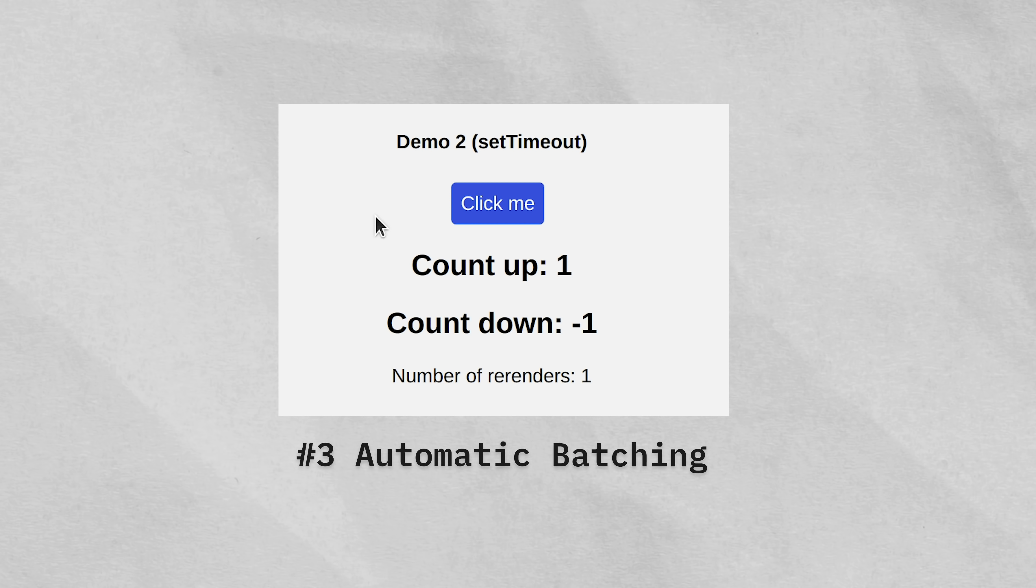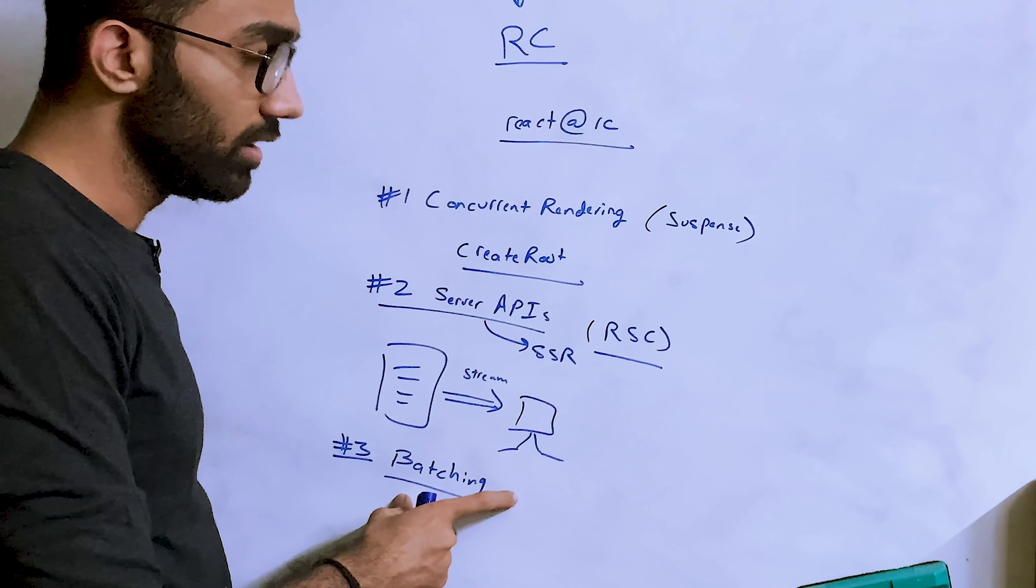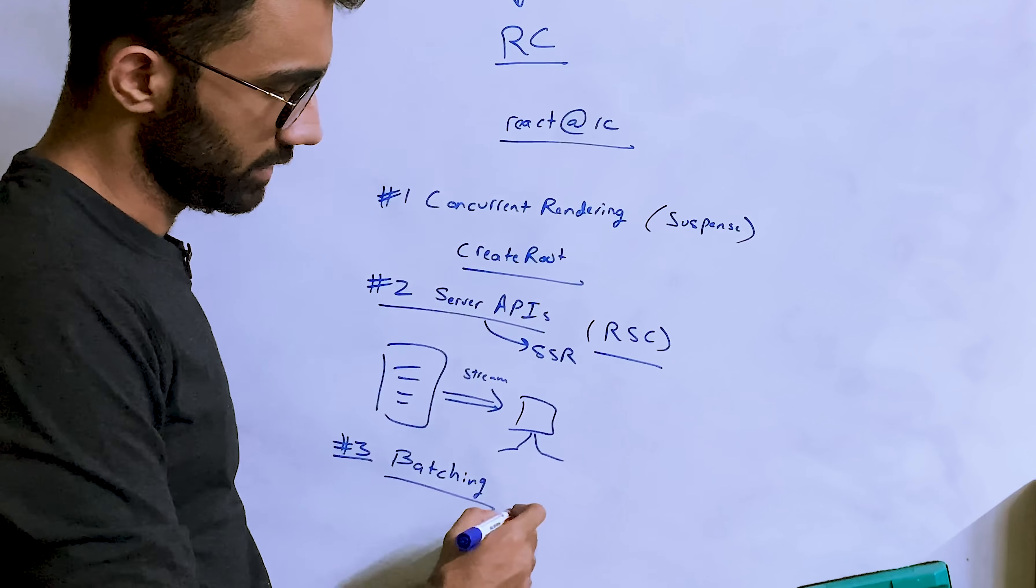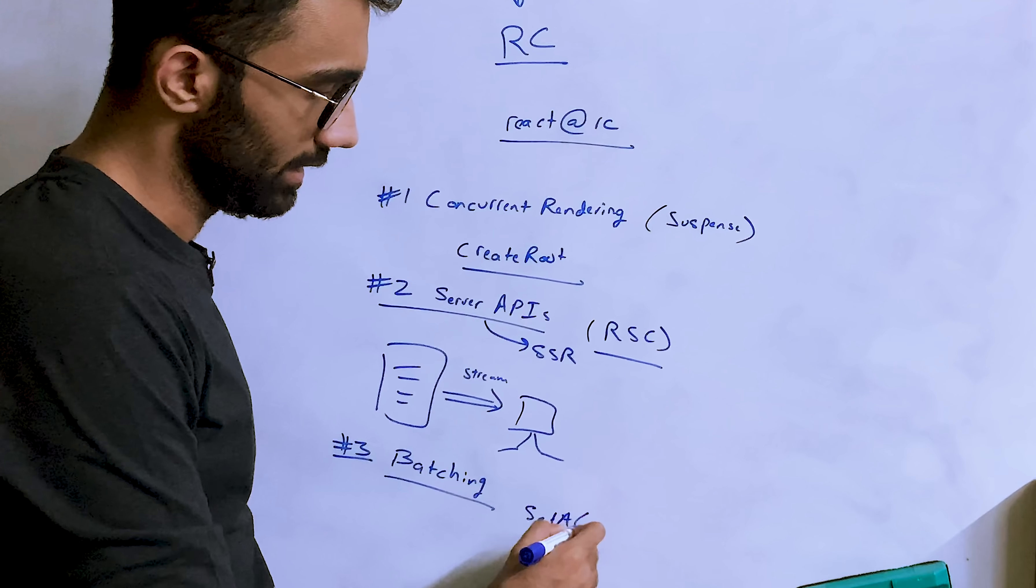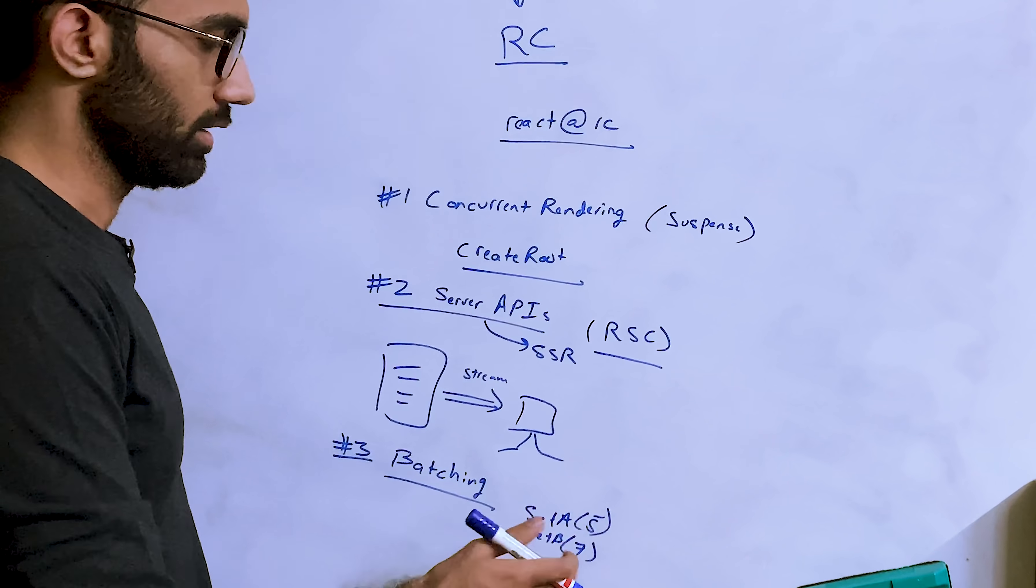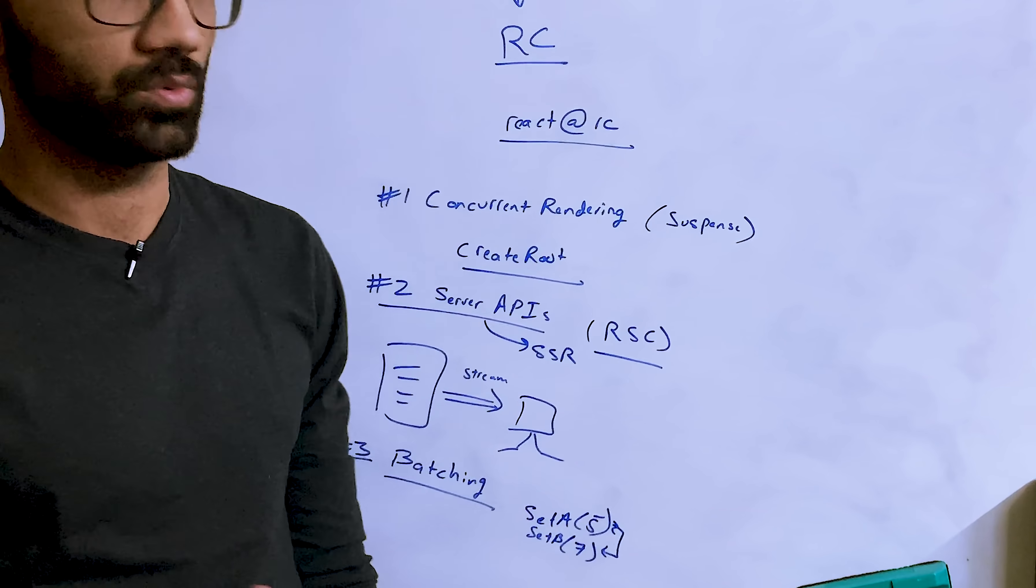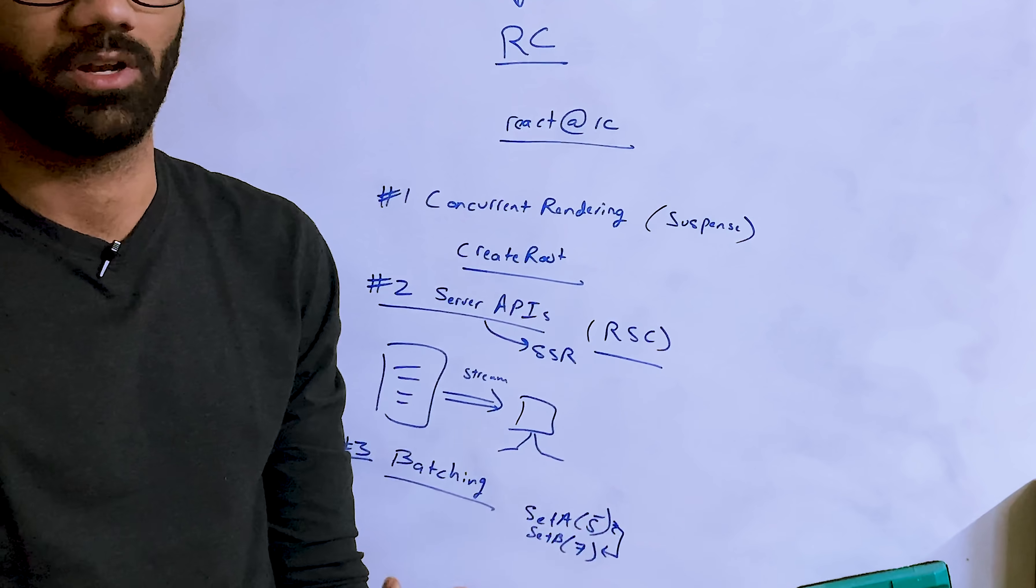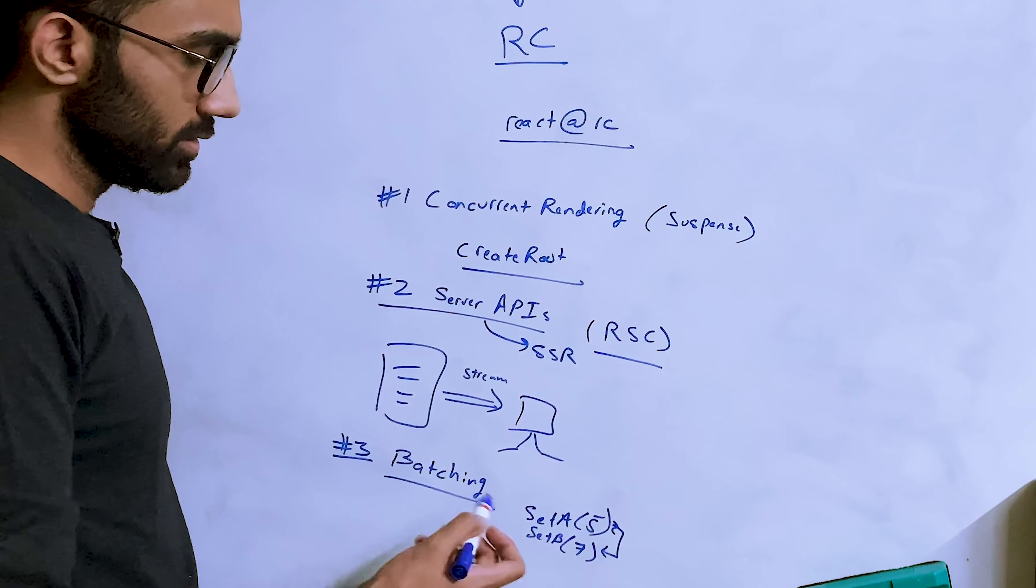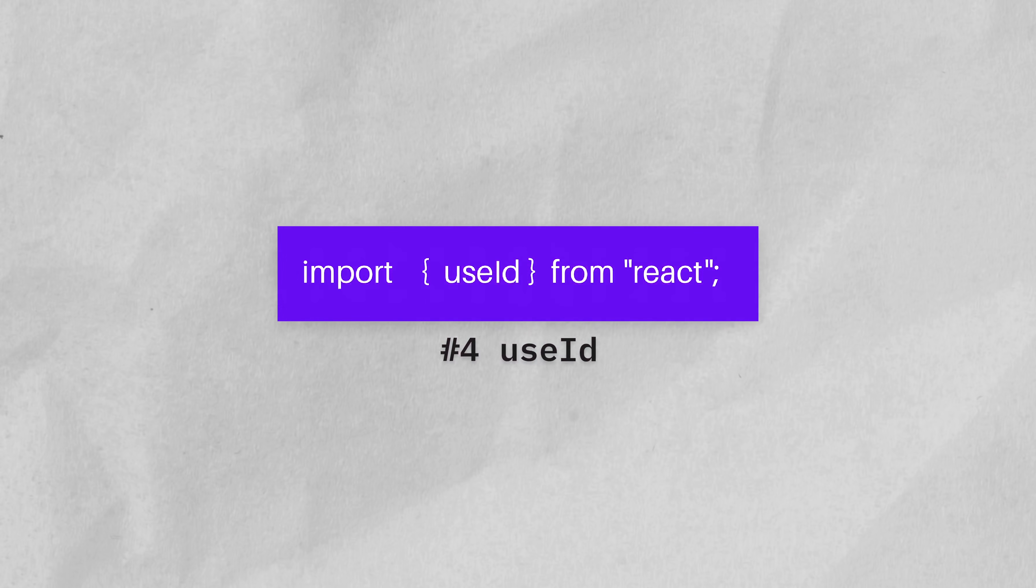The third thing which is interesting is batching. This is also something we have discussed maybe a couple of months ago. React 18 brings in support for batching the state updates. React earlier also used to batch state updates. For example, if you would say setA has 5 and setB has 7, where setA and setB are two state variables, it would batch them together. But there were certain scenarios where React would not batch them, for example in setTimeout. That is also now fixed or improved in React 18.